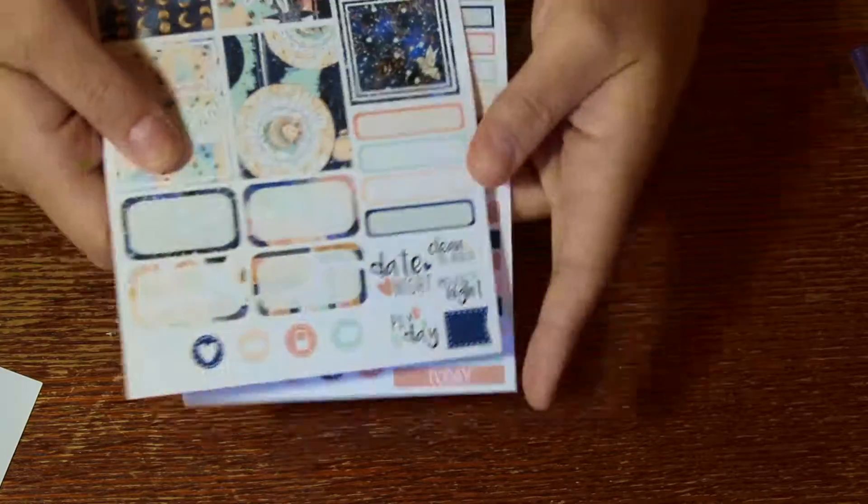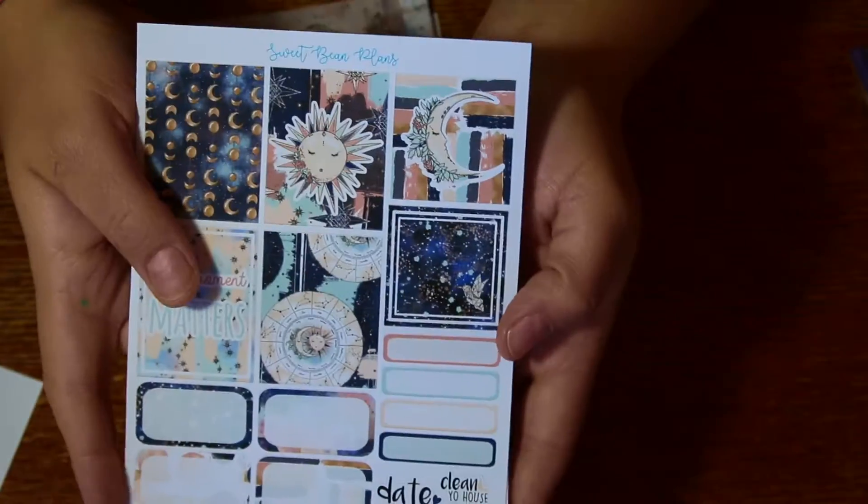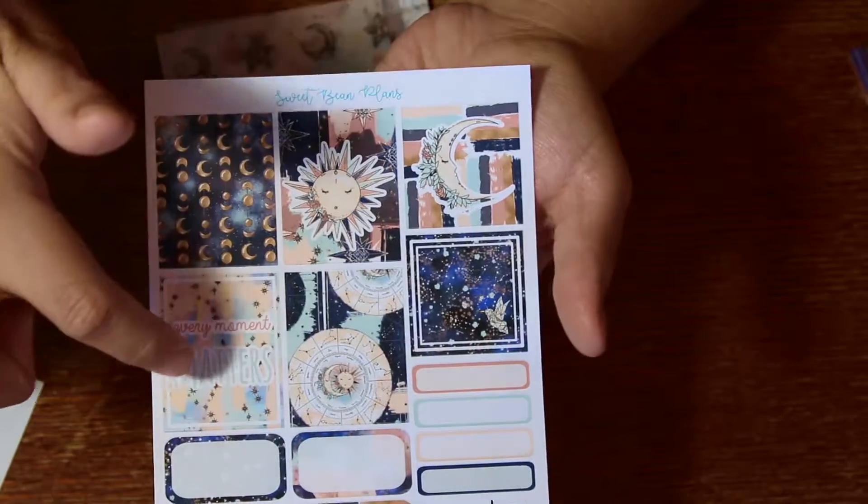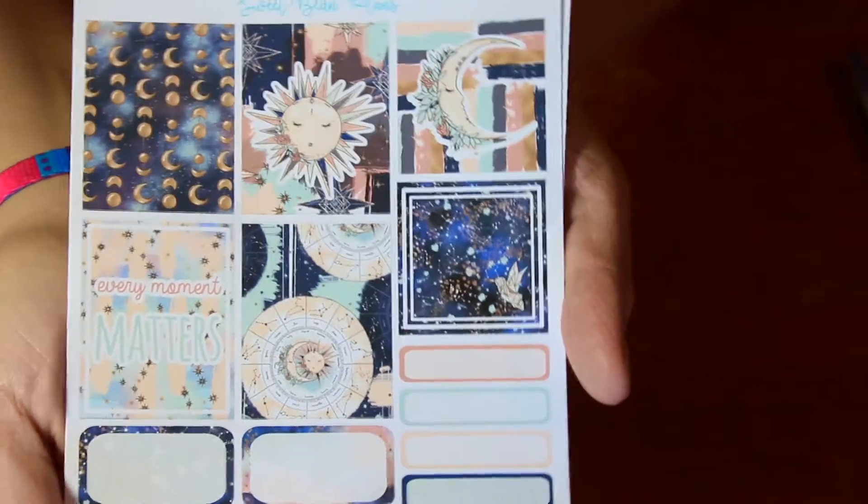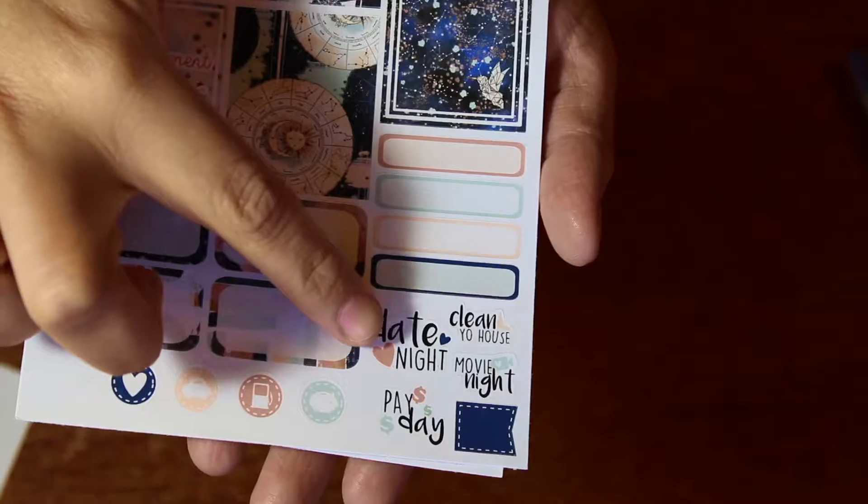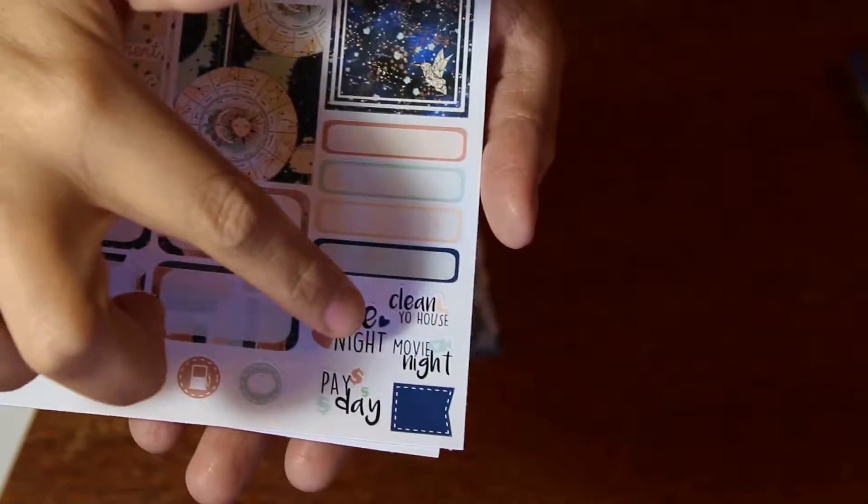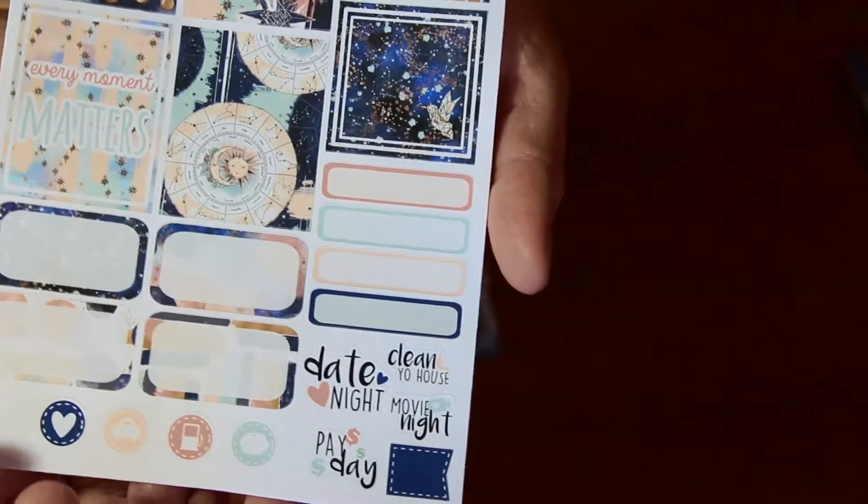Next you get two samplers of stickers. So the first one here is like the decorative boxes. You get four full size Erin Condren ones. These are slightly smaller. Then you get some blank ones here and a little sample of these day ones. I like the font of date night and clean your house. It's very playful and it goes perfectly with the pattern and color scheme.